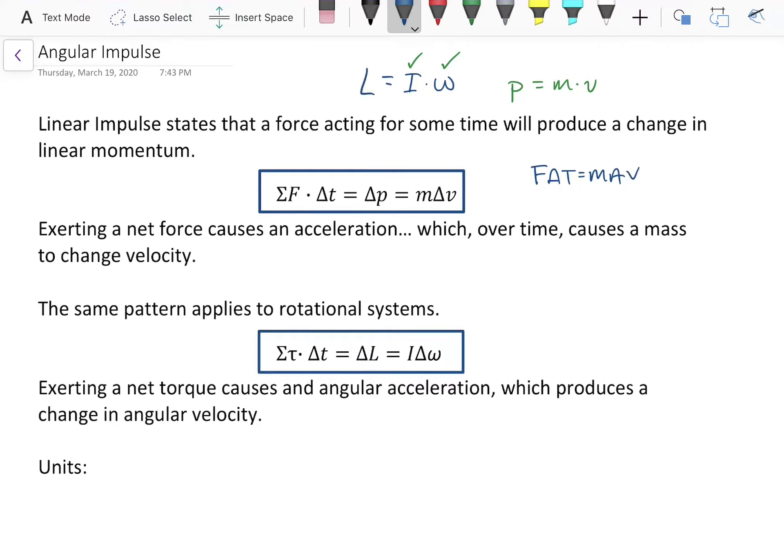So, for a system that has a constant net torque applied to it, sigma tau, for some amount of time, delta t, you'll get a change in angular momentum, which instead of m delta v will be I delta omega. So, it's all pretty much the same old stuff, it's just the same ideas, just with different labels attached to it.